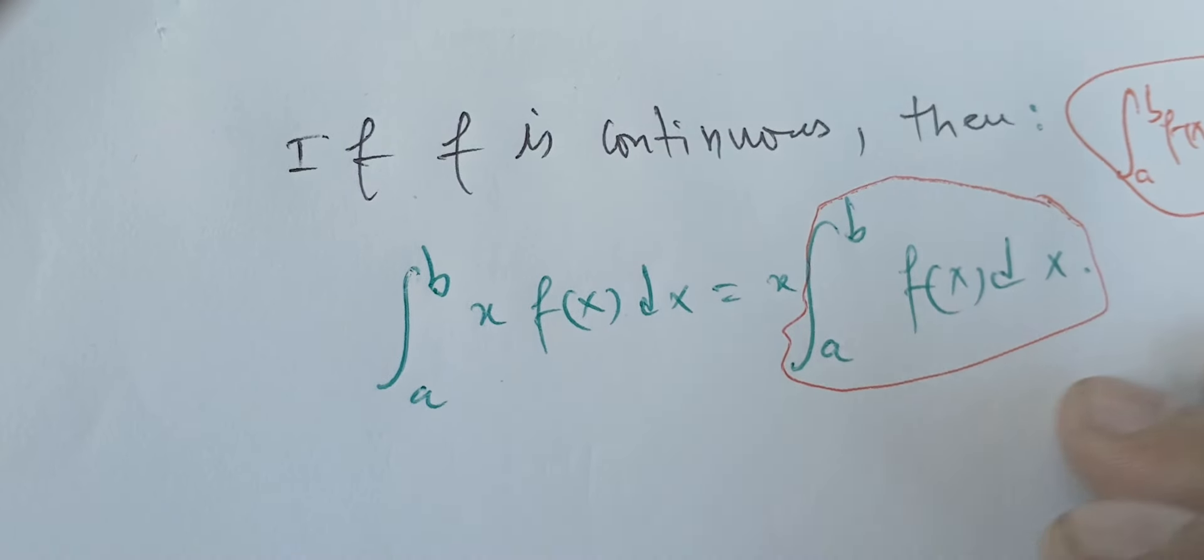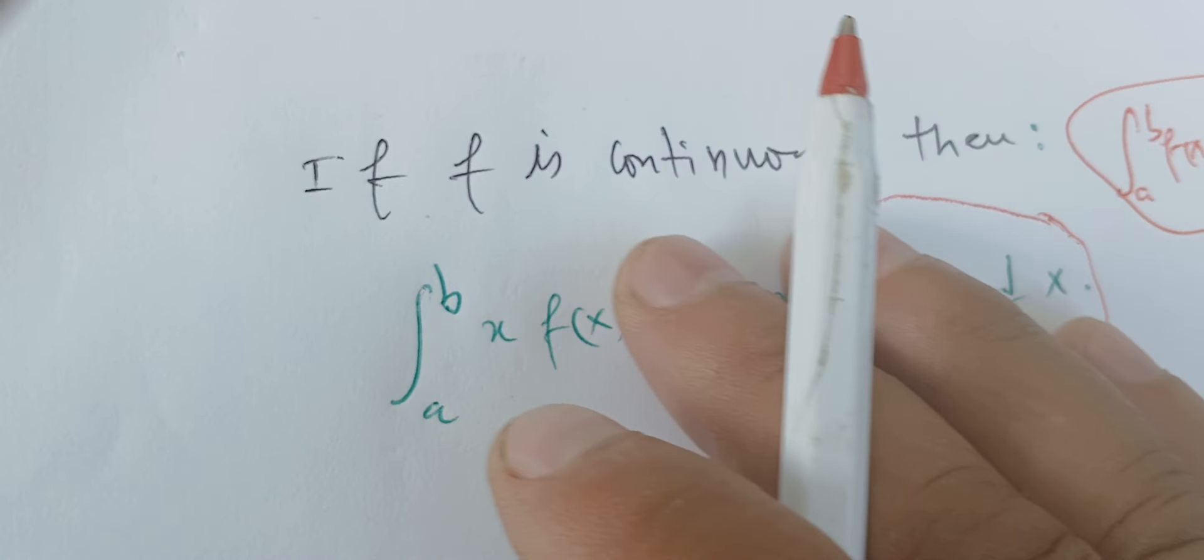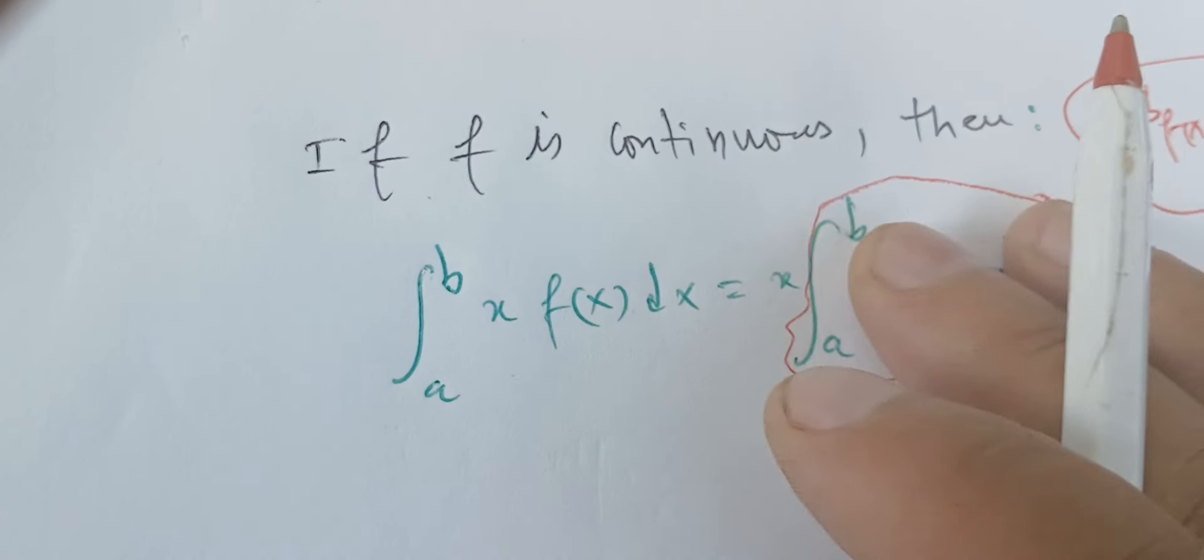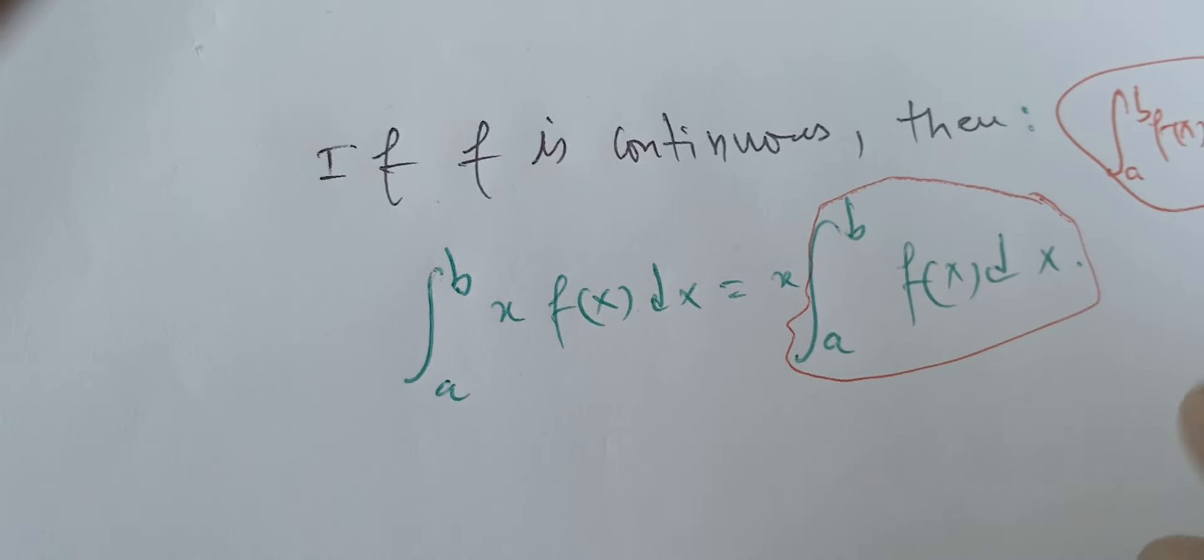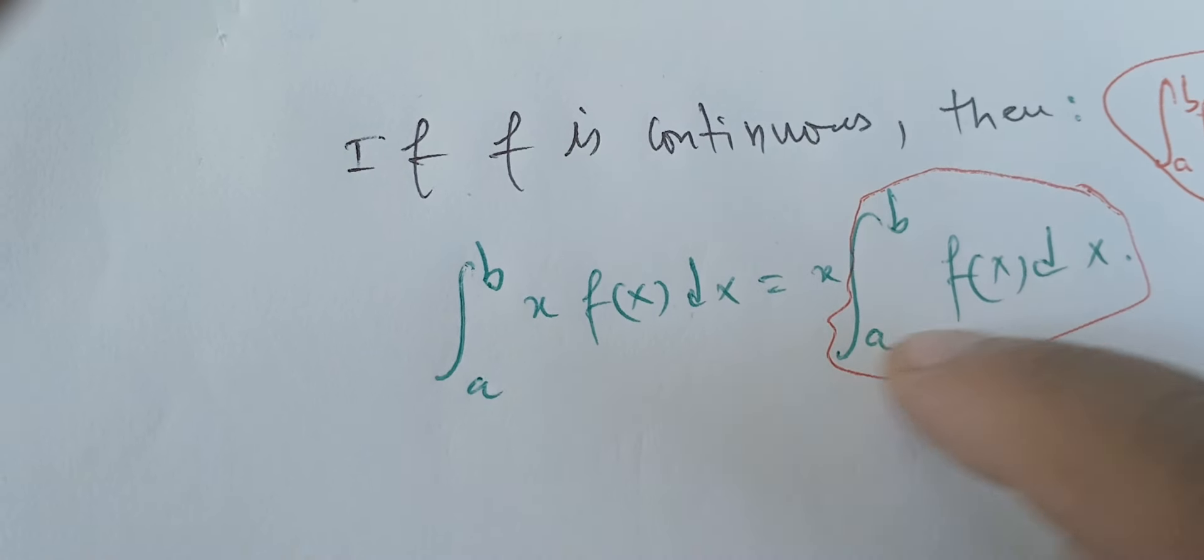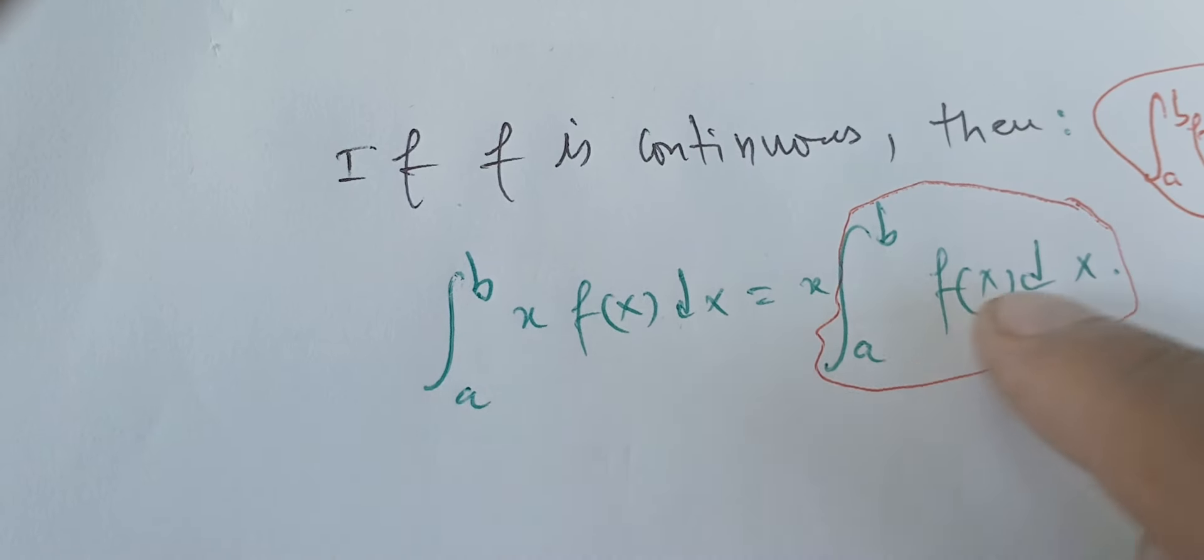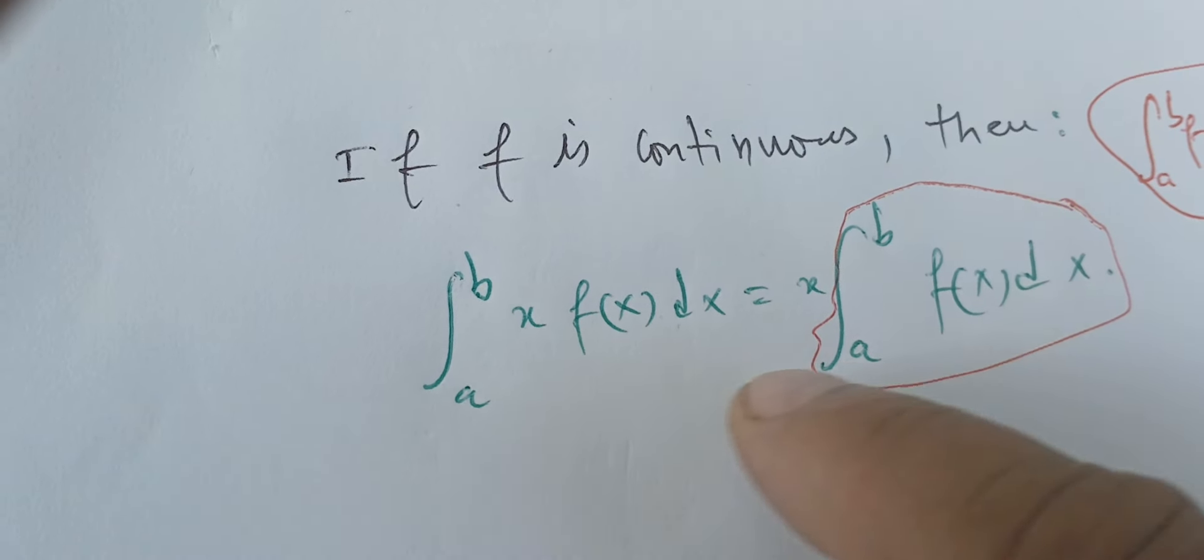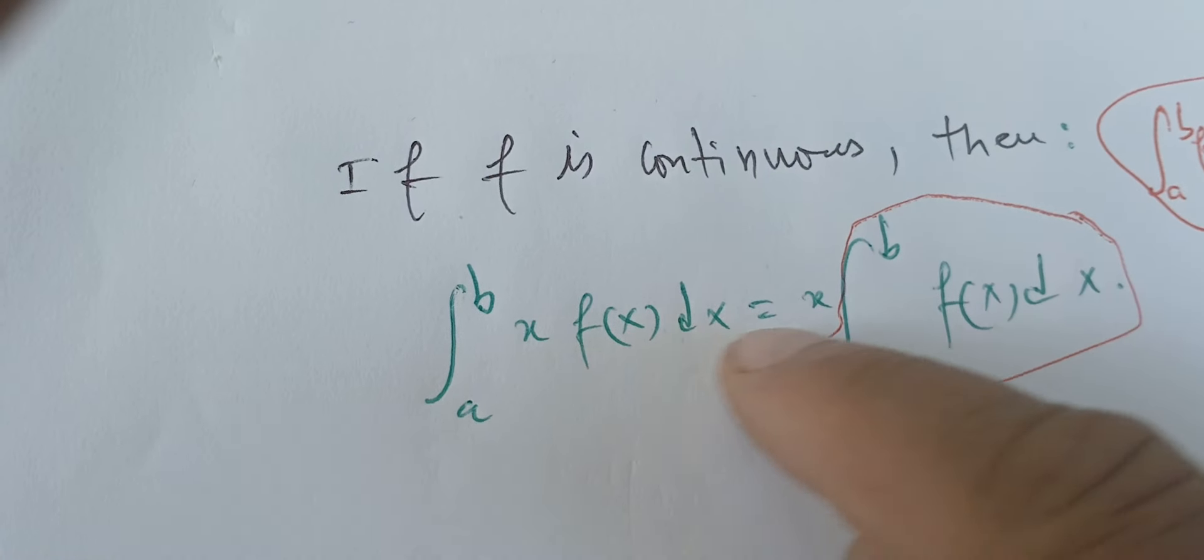When we have something like this, to prove that it's wrong we need to find only one simple function that would violate this inequality, and therefore we can deduce that it's not true for all functions.